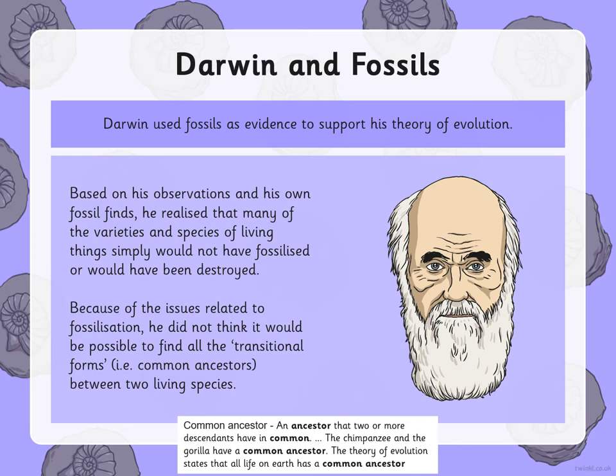Because of the issues related to fossilisation, he did not think it would be possible to find all the transitional forms — all the common ancestors between two living things — due to the fact that they would not all have fossilised. A common ancestor is an ancestor that two or more descendants have in common. For example, the chimpanzee and the gorilla have a common ancestor — they may not be the same today, but they would have originated from it.